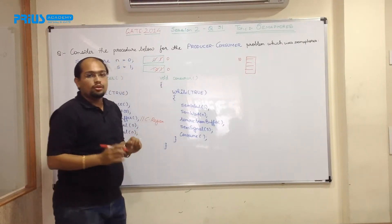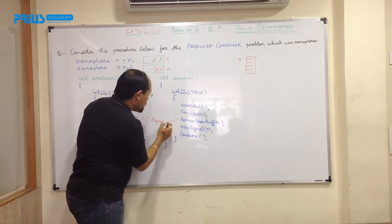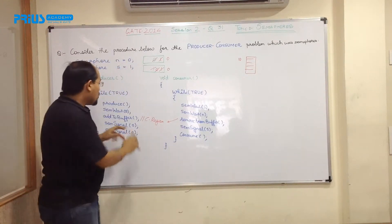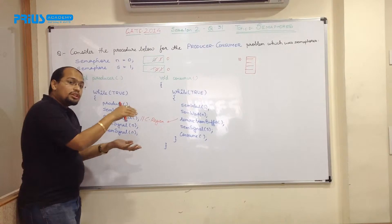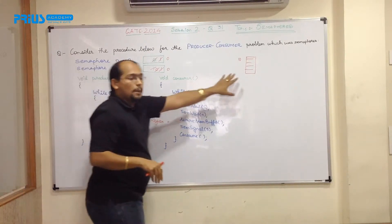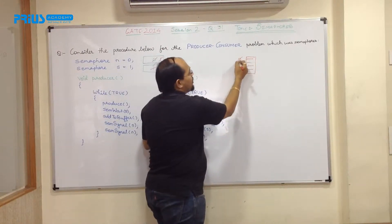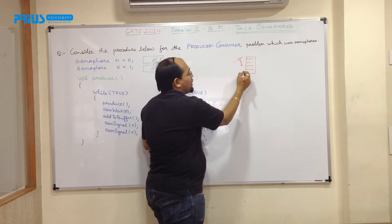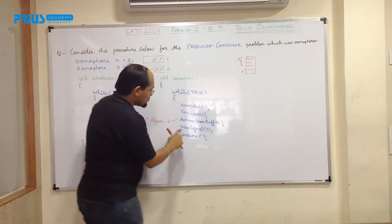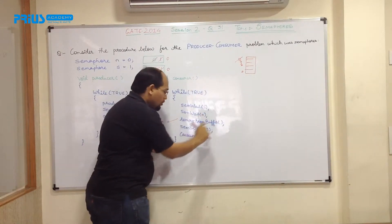That means again we are entering into the critical region where over here the consumer was producing the thing and putting into the basket. Now consumer is consuming the thing from the basket. So this will decrement to 9, 8 and up to 0.